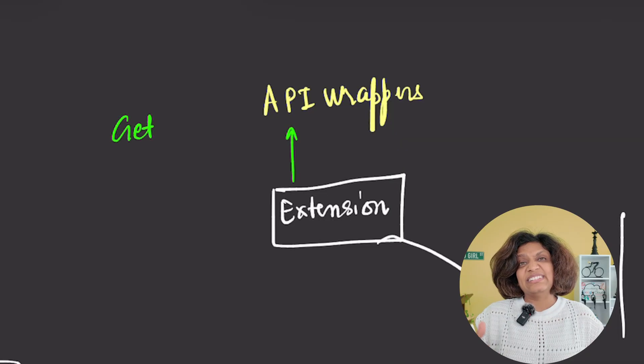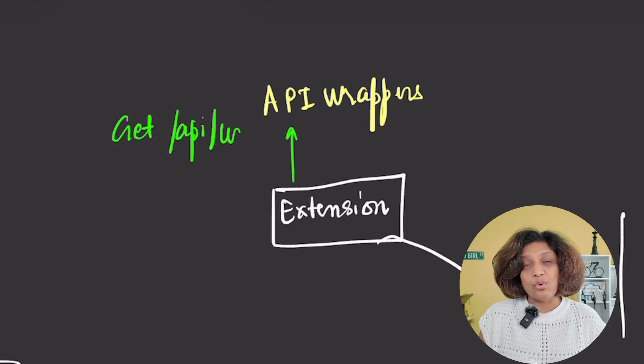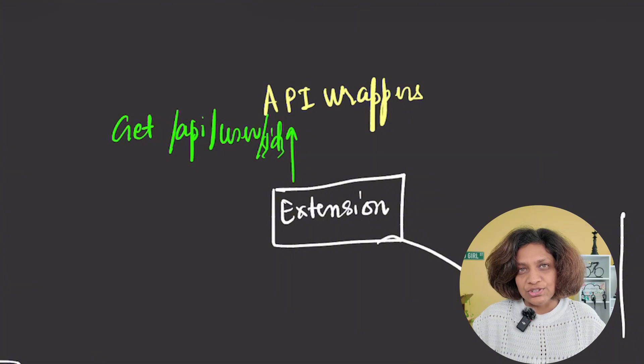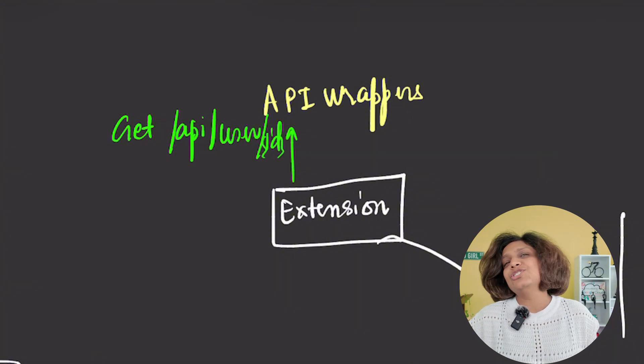Here's an example. You give your agent access to get API user's ID endpoint. When someone asks, what's the email of this user, the agent knows exactly which API to call.